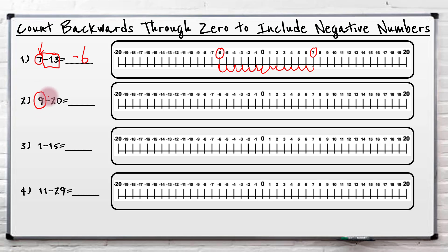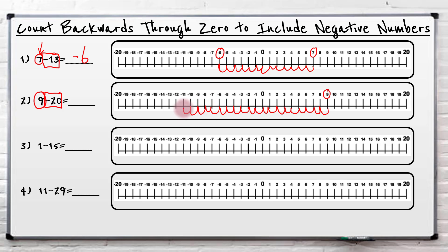Let's look at another one. So we're at nine and taking away or going back twenty. Start at nine, go back twenty: one, two, three, four, five — we'll do sets of five — six, seven, eight, nine, ten, eleven, twelve, thirteen, fourteen, fifteen, sixteen, seventeen, eighteen, nineteen, twenty. That takes me to minus eleven. So nine minus twenty is minus eleven.